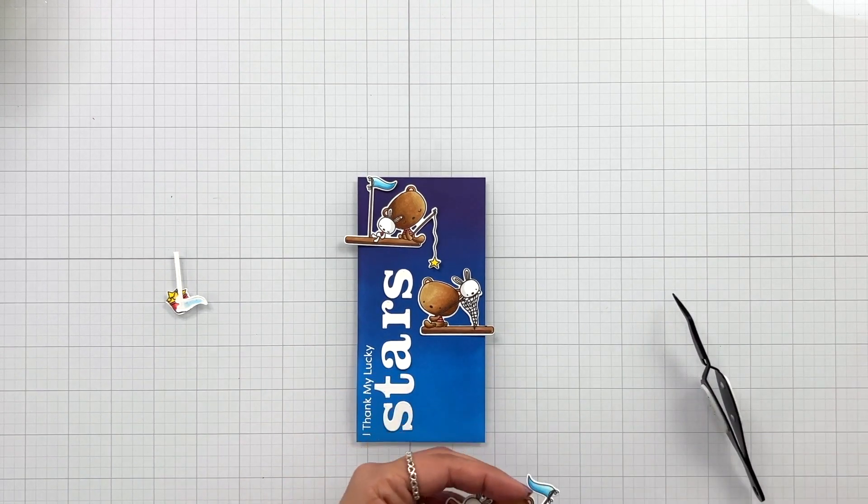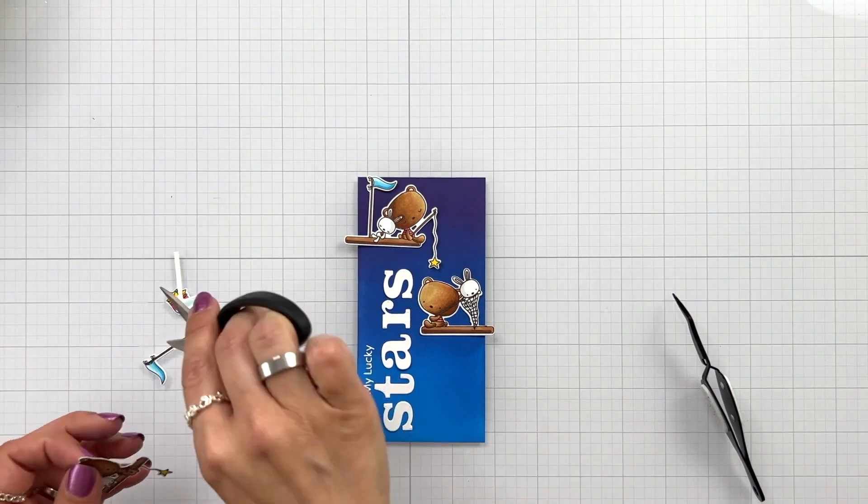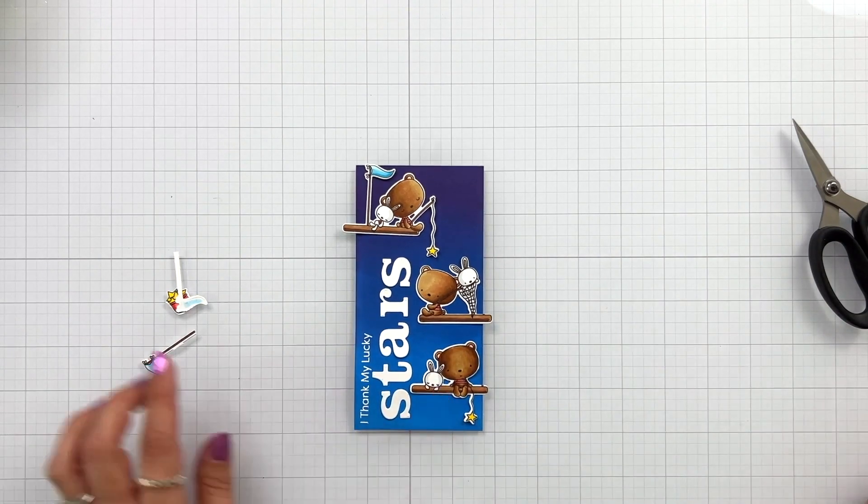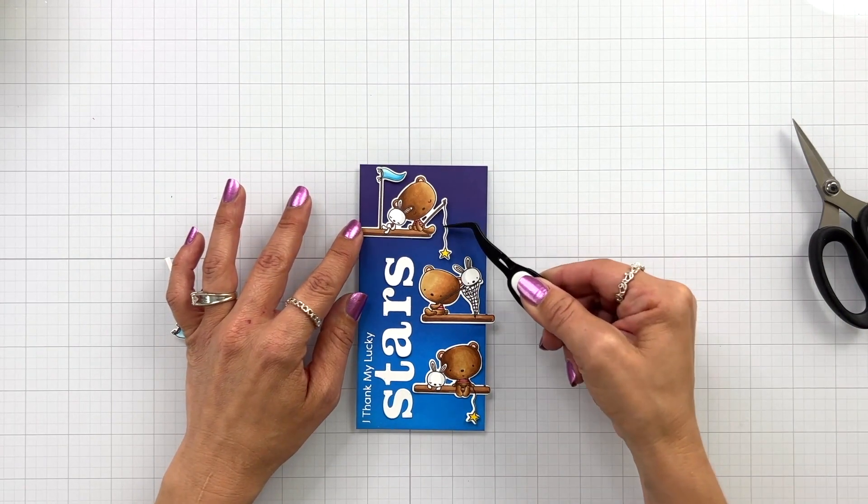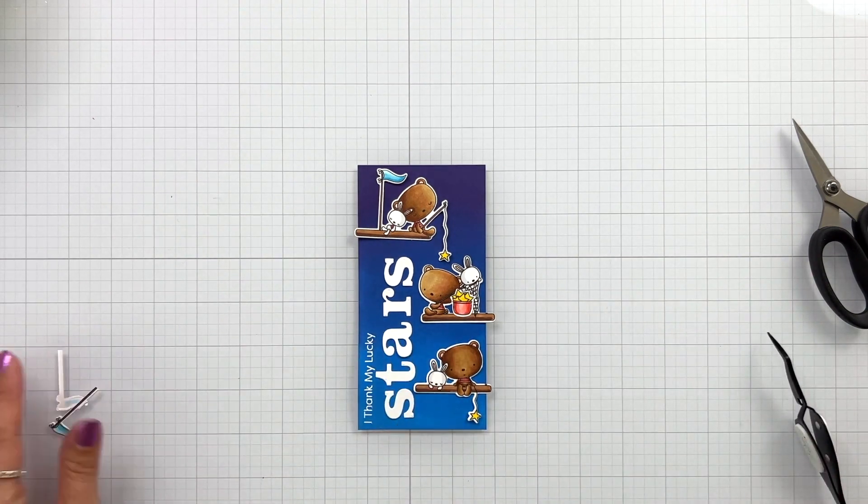So I trimmed around the bear's head and towards the bottom of that seat. Now I think what I forgot to show in the video is that there is a little bit of black line where the flag connects to that bench. I took a white gel pen and just kind of colored in that area so that way it looks like just one nice white outline around the image.